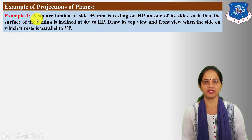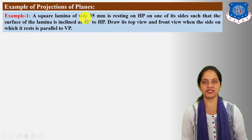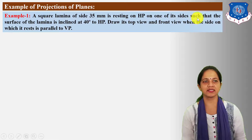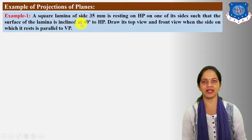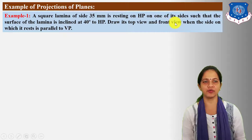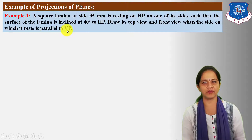Example 1: A square lamina of side 35 mm is resting on HP on one of its sides such that the surface of the lamina is inclined at 40 degrees to HP. Draw its top view and front view when the side on which it rests is parallel to VP.